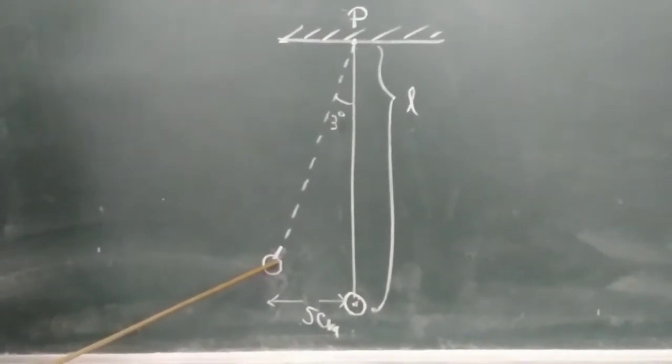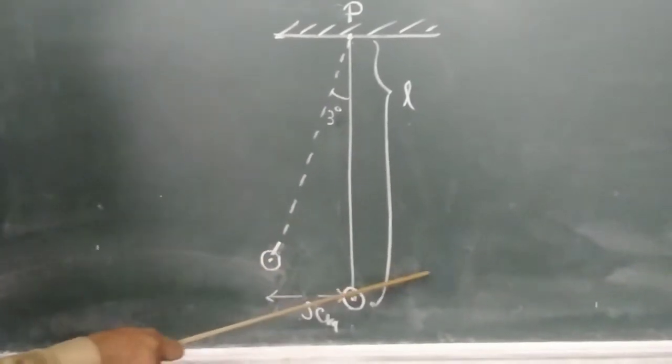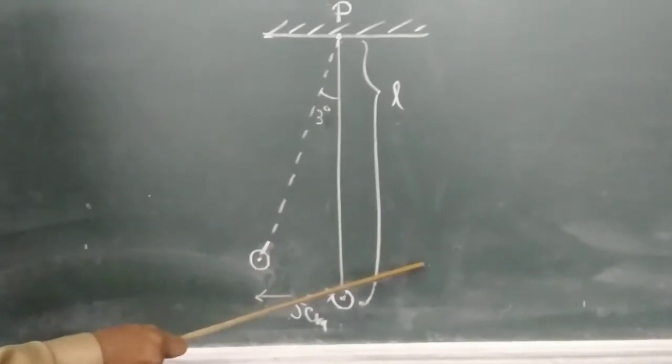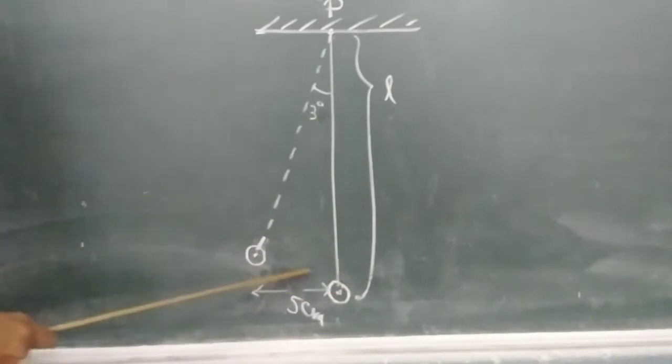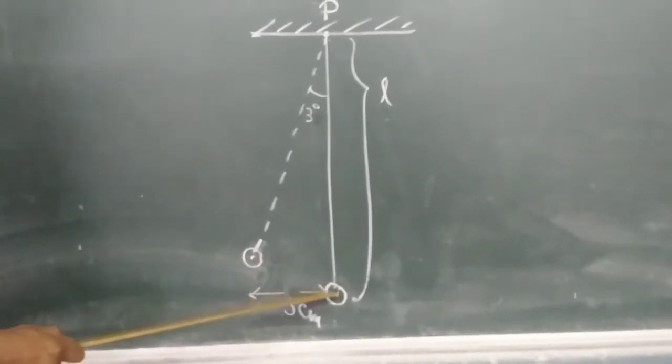And then when you leave this bob here, the bob itself starts to move to and fro. It will start to oscillate to and fro. So if you start from here, the bob will go to mean position.